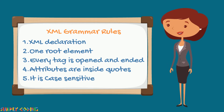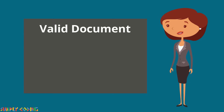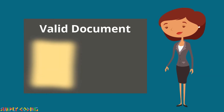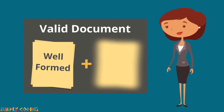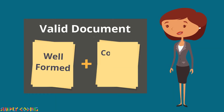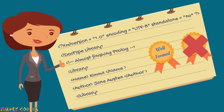What is a valid document? A valid XML document is one that is well-formed as well as conforms to the specification of a DTD. As our example is well-formed but does not have a DTD, it is not a valid XML document.